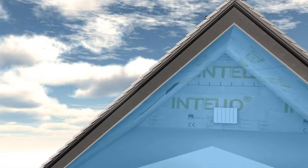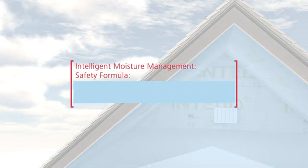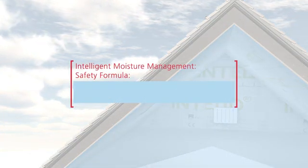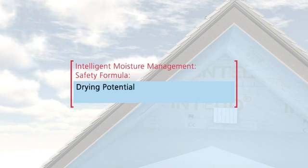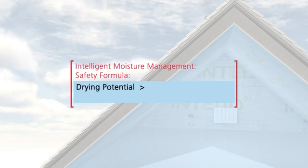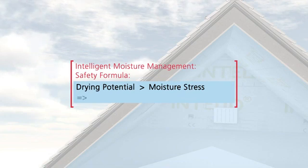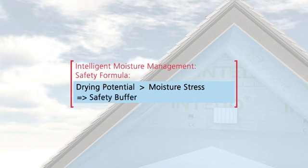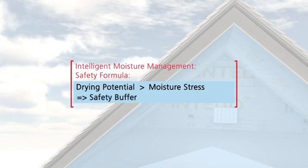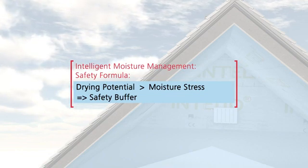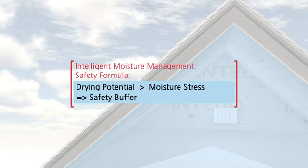There's one simple rule that has to be followed, to make sure that a thermal insulation structure is safe. To reliably prevent structural damage, the drying potential must always be higher than the maximum moisture stress. The greater the difference between the moisture stress and the drying potential, the greater the safety buffer for building owners, planners and the builders.